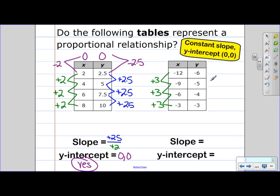And for the y, from negative 6 to negative 5 is plus 1. From negative 5 to negative 4 is also plus 1. And from negative 4 to negative 3 is also plus 1. So our change in y is plus 1.